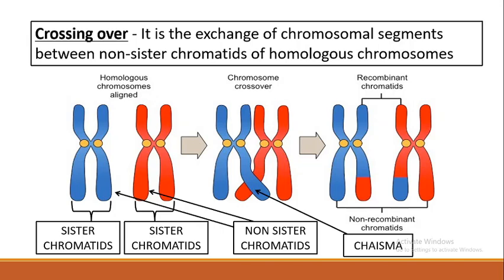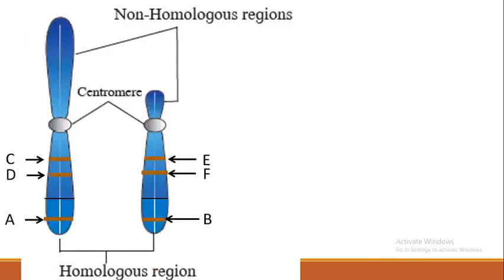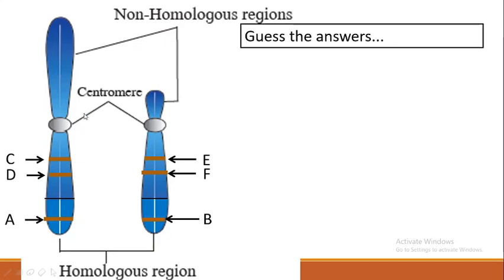Crossing over is the exchange of chromosomal segments which occurs between the non-sister chromatids of homologous chromosomes. This is a representation of an X and Y chromosome. The area below the marked line is the homologous region of the X and Y chromosome, and the regions above are the non-homologous regions of the X and Y chromosome. The centromere is marked here.